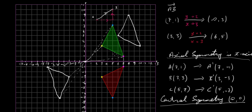So with central symmetry, the image has been flipped over like a mirror but also rotated in the other direction as well — it's been flipped and rotated.